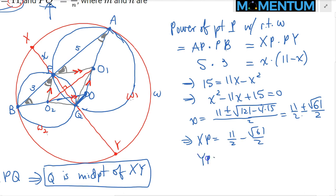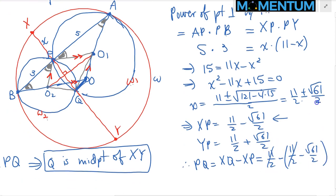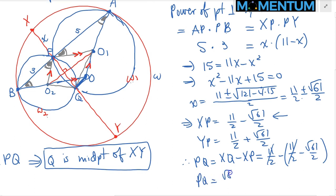The question asked for PQ. So PQ = XQ − XP. But XQ is half of XY = 11/2. And XP = 11/2 − √61/2. The 11/2s cancel, so PQ = √61/2. The question asks for PQ squared, which is 61/4.